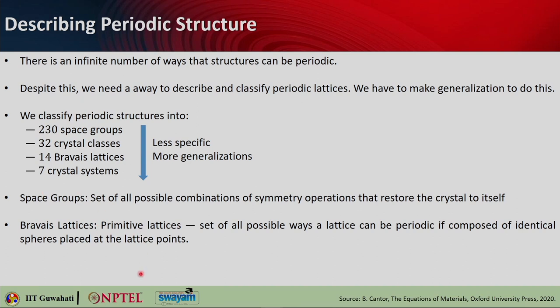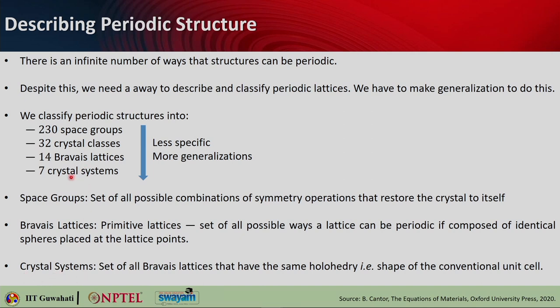Crystal systems are the set of all Bravais lattices that have the same holohedry — that is, the shape of the conventional unit cell. If you classify based on crystal systems, there are only seven. They are basically the set of all Bravais lattices which have the same shape of the conventional unit cell.